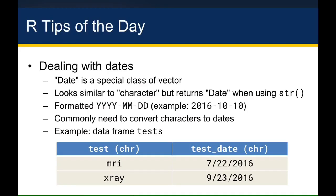Earlier in the class, we talked about the different types of data that could be stored in a column of a data frame, and one of the types of data we mentioned were dates. So today's R Tip of the Day talks about how to deal with dates when it comes to working with data frames. If you've read in a data set and you're wondering whether your date variables are coded correctly as dates, there are two easy ways to find out.